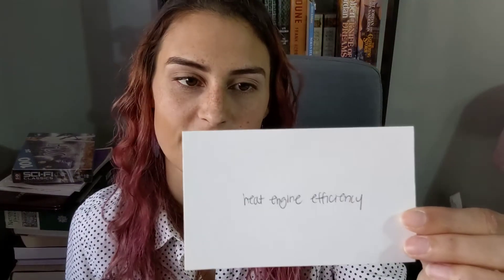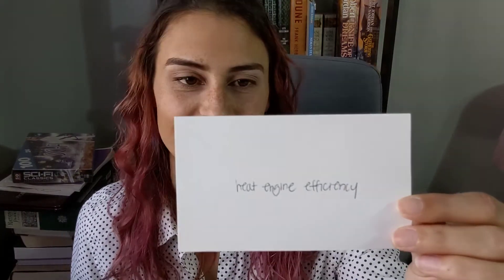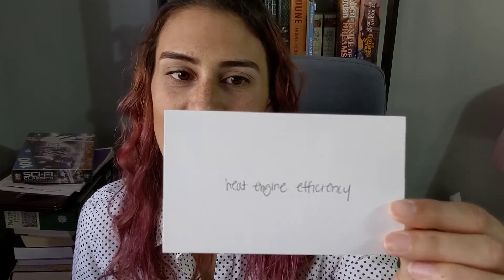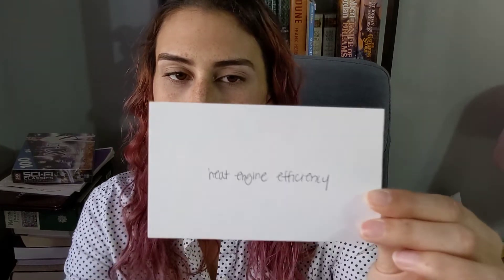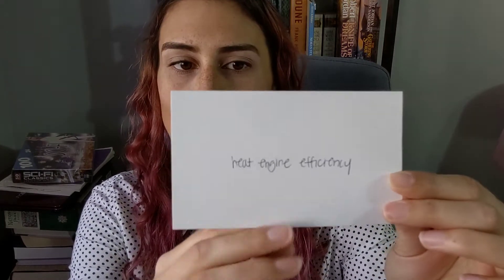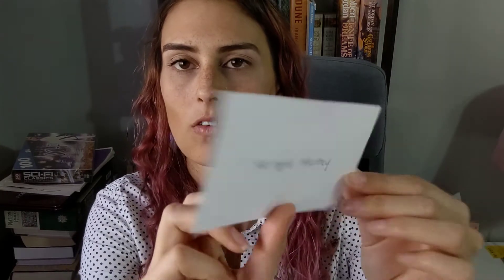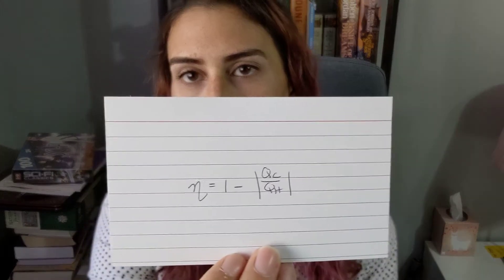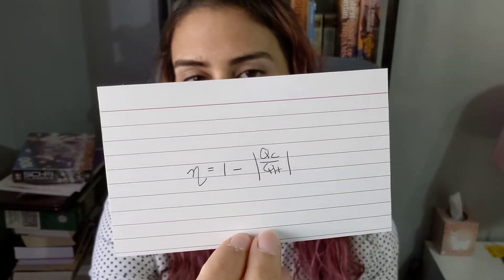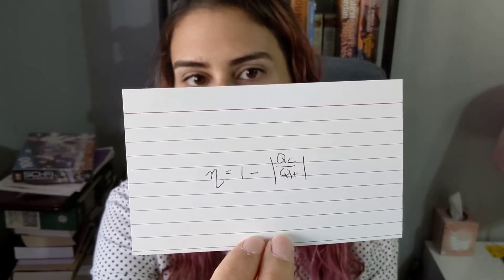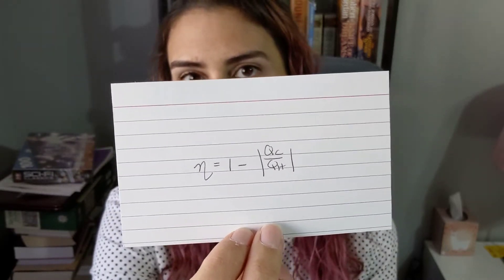Heat engine efficiency: eta equals 1 minus the absolute value of Q_C over Q_H, where those are the heats of the cool and hot portions of the cycle.